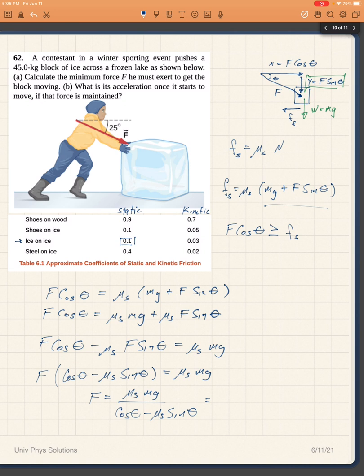It's time to put in all the numbers. That's going to be 0.1 times the mass which is 45 kilograms times the acceleration of gravity 9.8 meters per second squared divided by the cosine of 25 degrees minus 0.1 times the sine of 25.